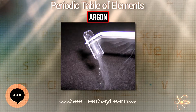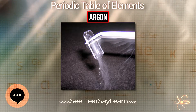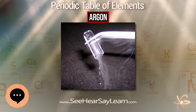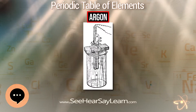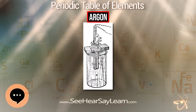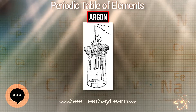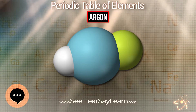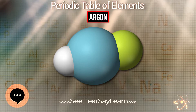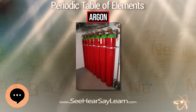Argon is more than twice as abundant as water vapor, 23 times as abundant as carbon dioxide, and more than 500 times as abundant as neon. Argon is the most abundant noble gas in Earth's crust, comprising 0.00015 percent of the crust.